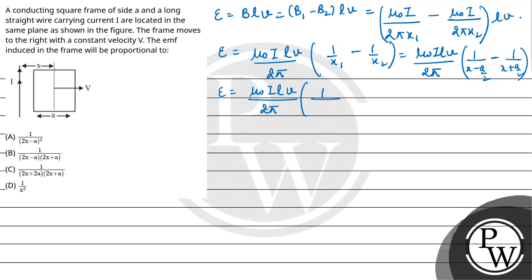Into 1 upon 2x minus A minus 2 upon 2x plus A, taking the LCM. Now 2 will get cancelled by taking 2 common from the bracket. So here it will be mu naught I LV upon pi.